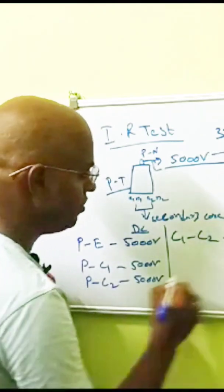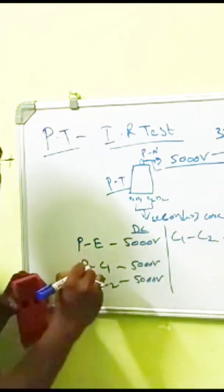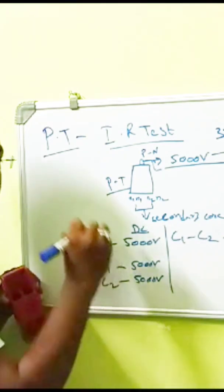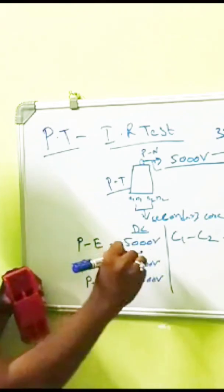500 volt, 5,000 volt. Primary test: we need to apply only 5,000 volt.